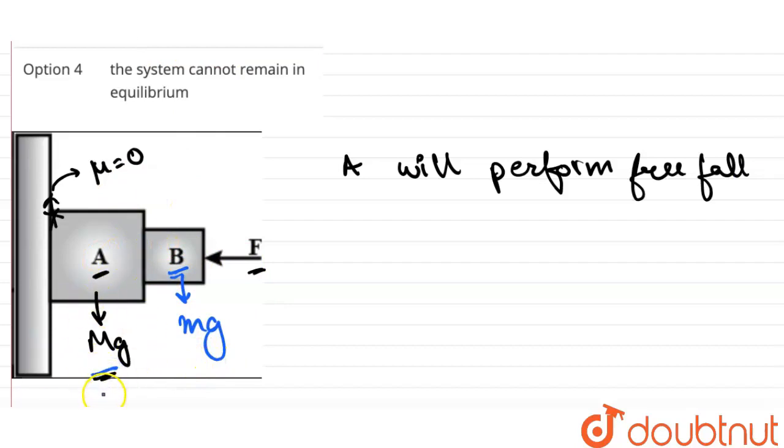So both of them are moving with acceleration g in the downward direction, so there is no relative acceleration between them. There is no relative acceleration between A and B.